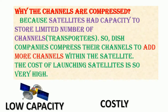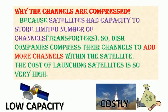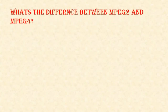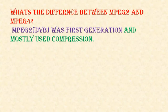Channels are compressed because satellites have the capacity to store only a limited number of channel transponders. So these companies compressed their channels to add more channels within the satellite. The cost of launching satellites is very high.